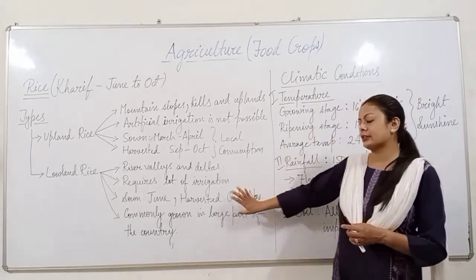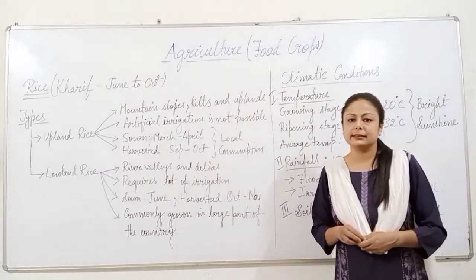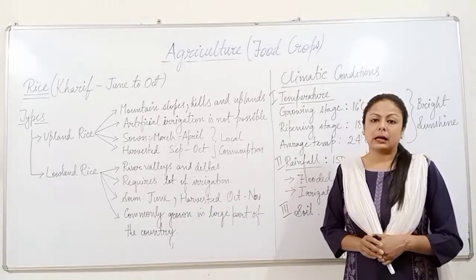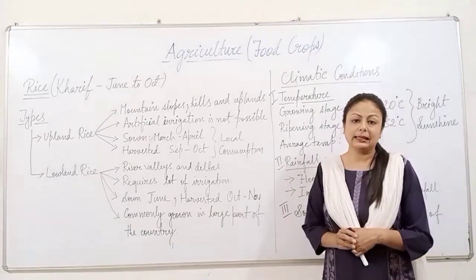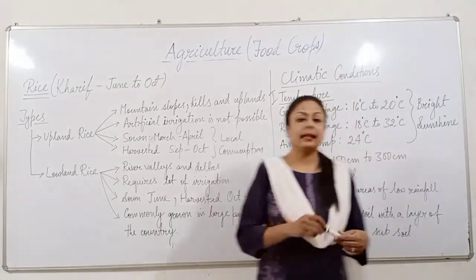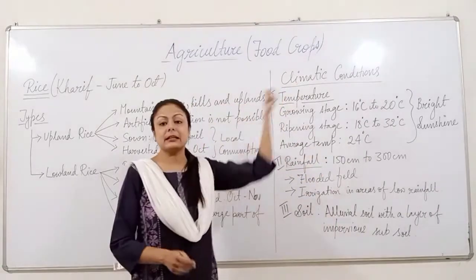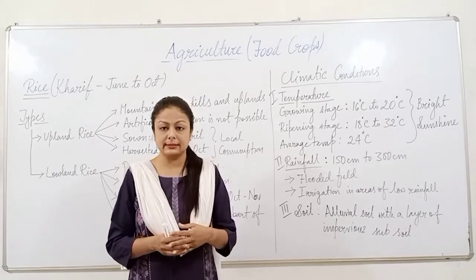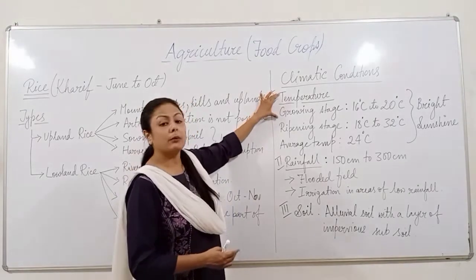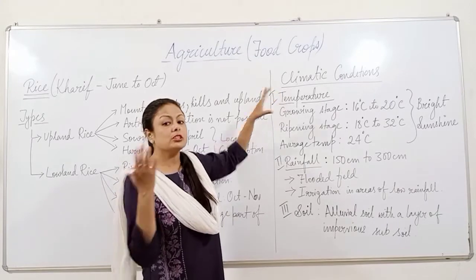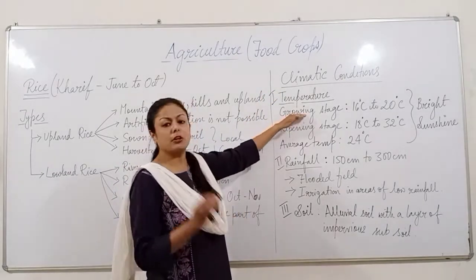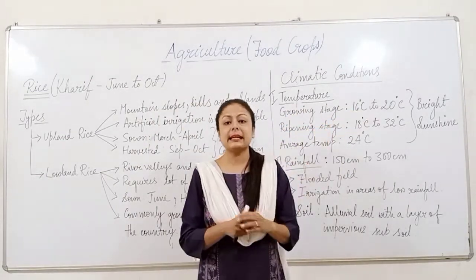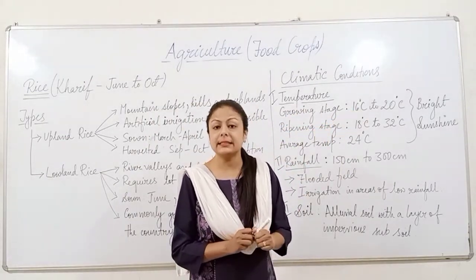Lowland rice is most commonly grown in India since irrigation is available in plain areas of river valleys and deltas. Now let's learn about the climatic conditions suitable for cultivation of rice in India. During the growing stage, rice requires a temperature varying from 16°C to 20°C.